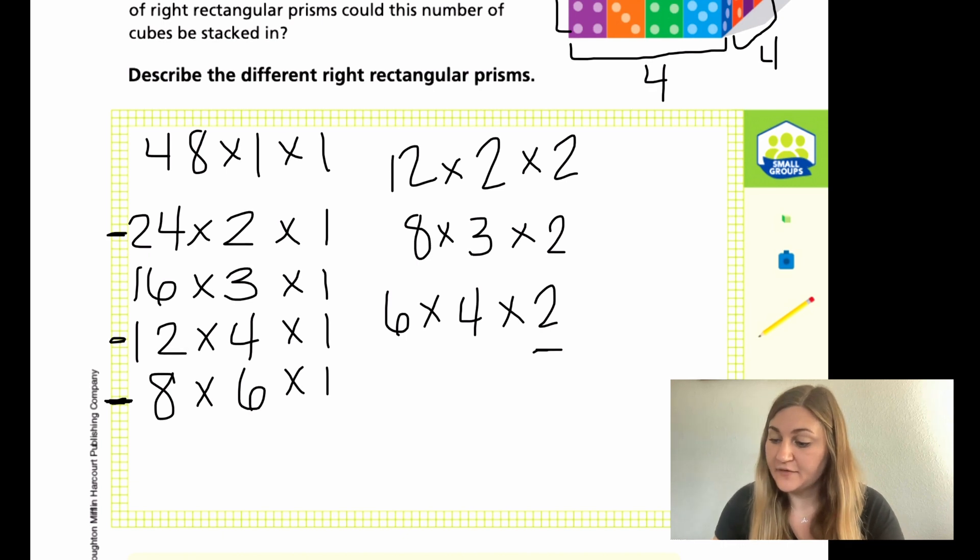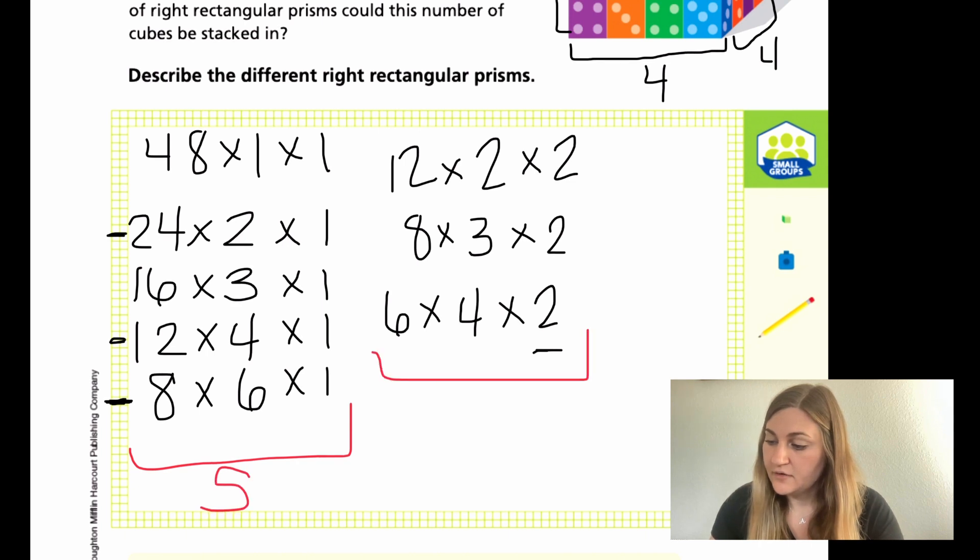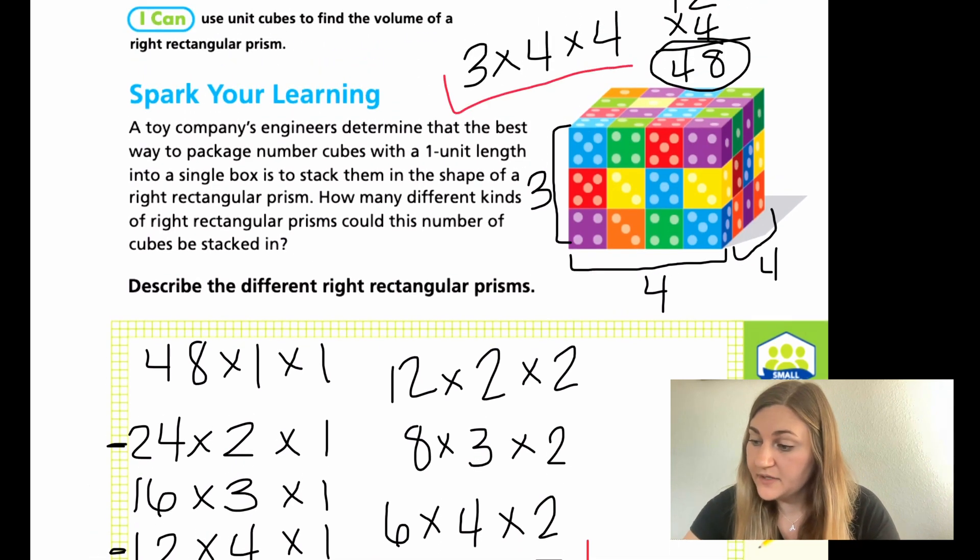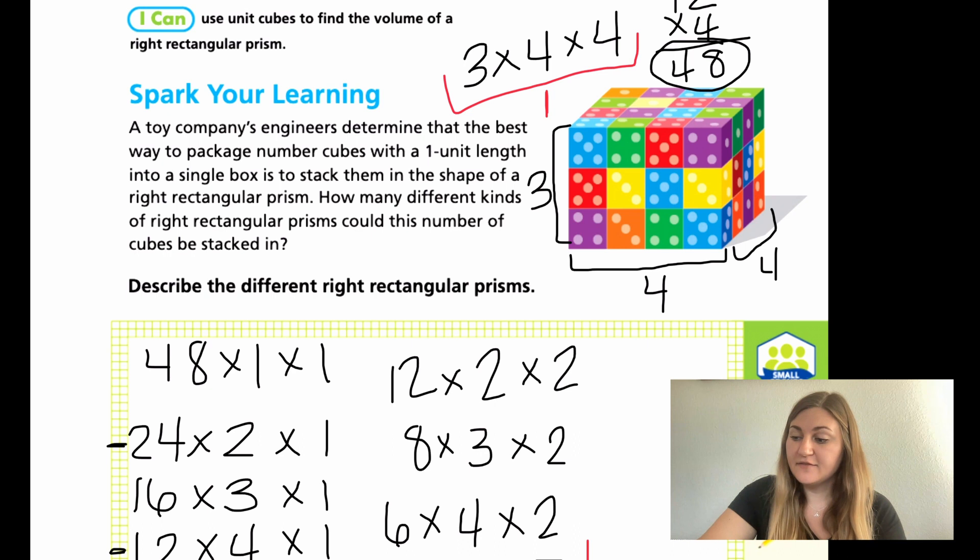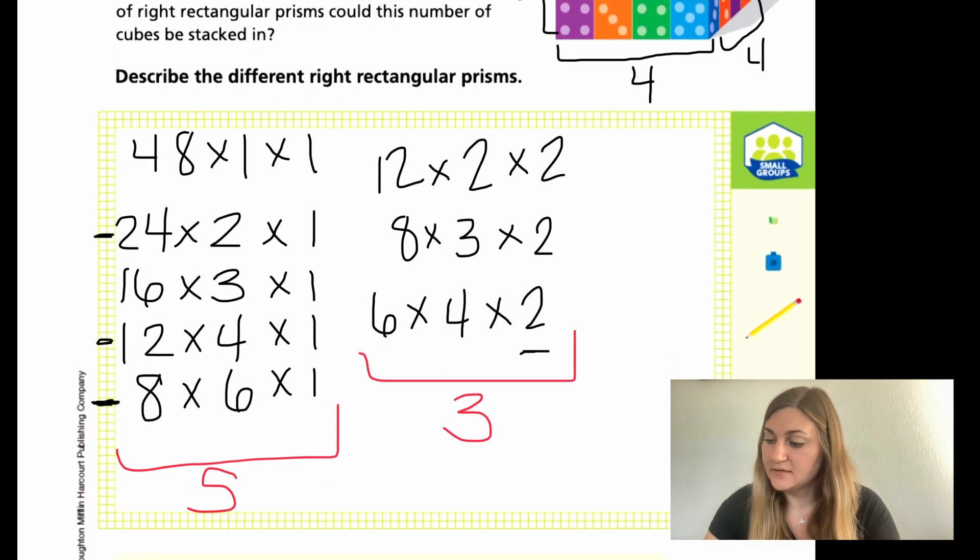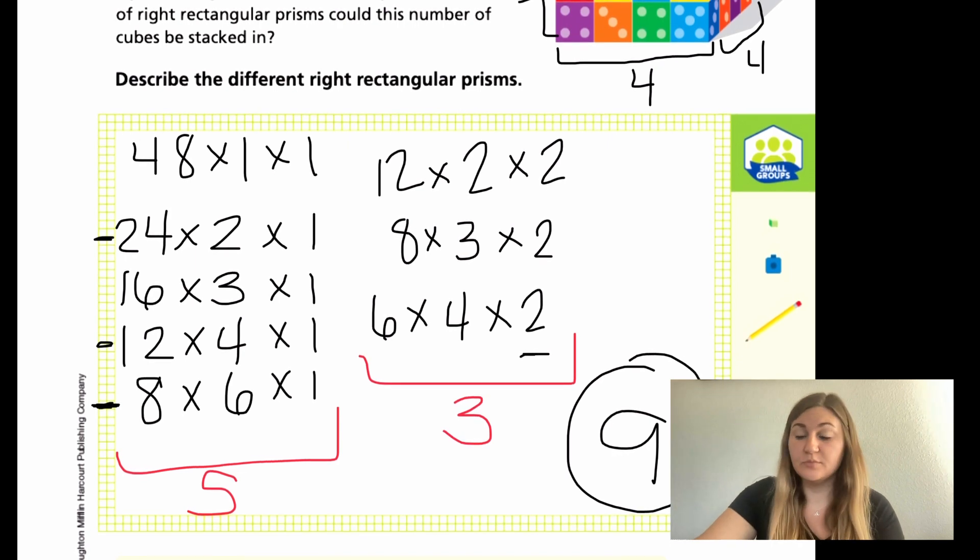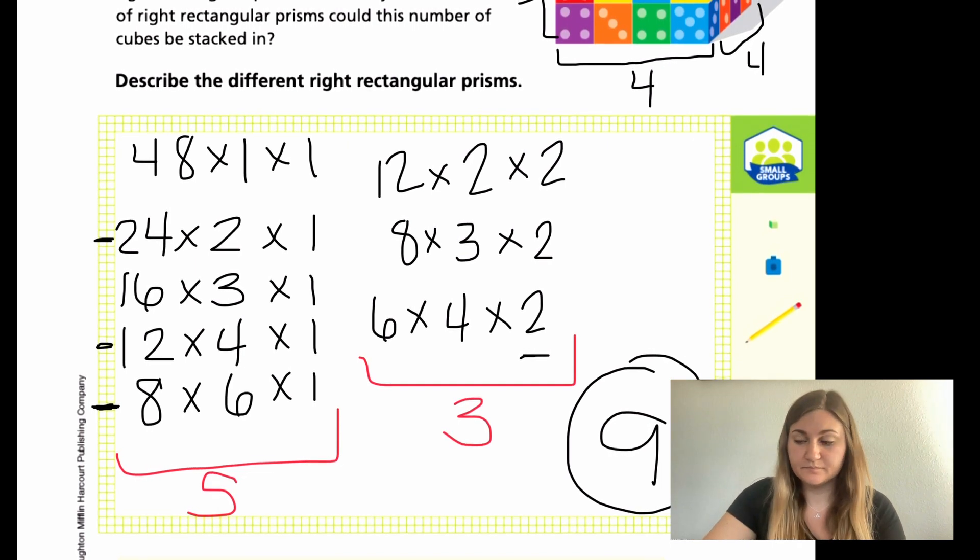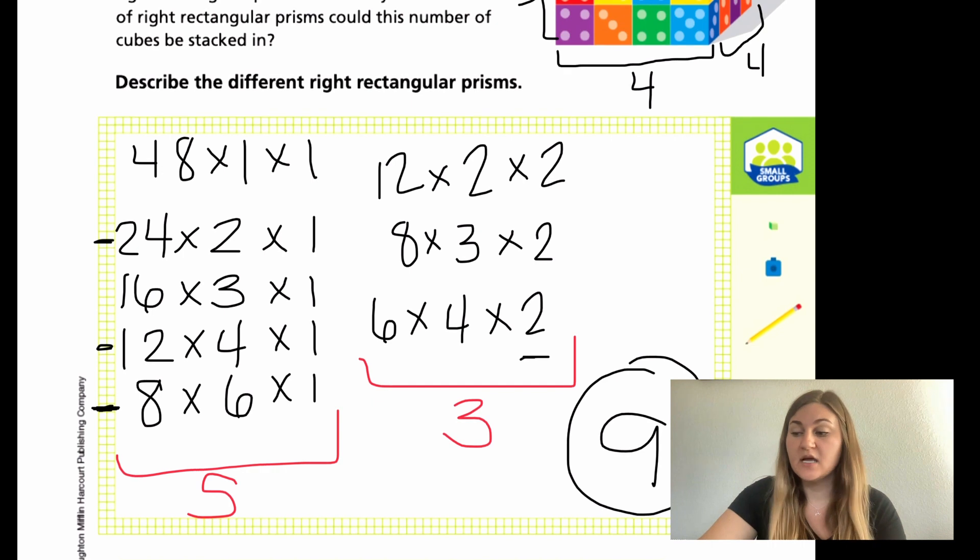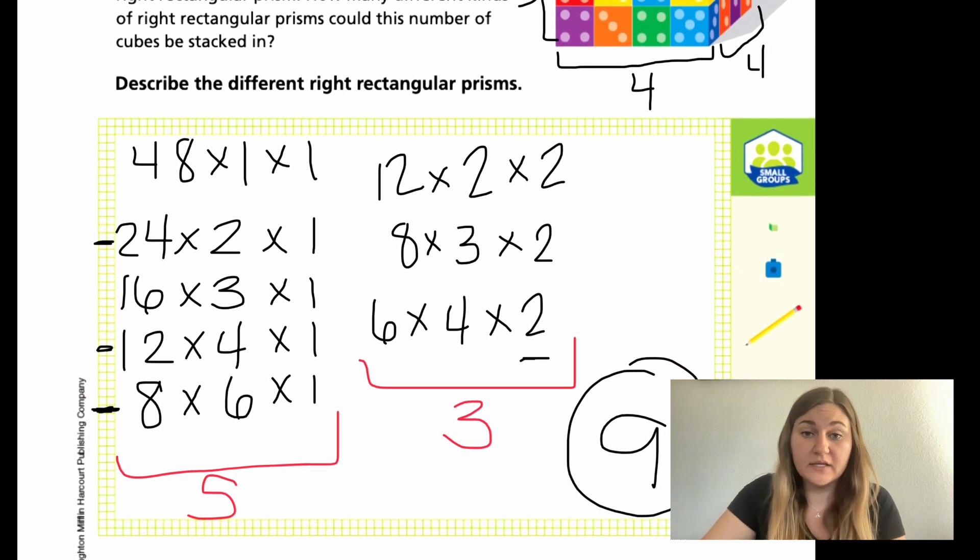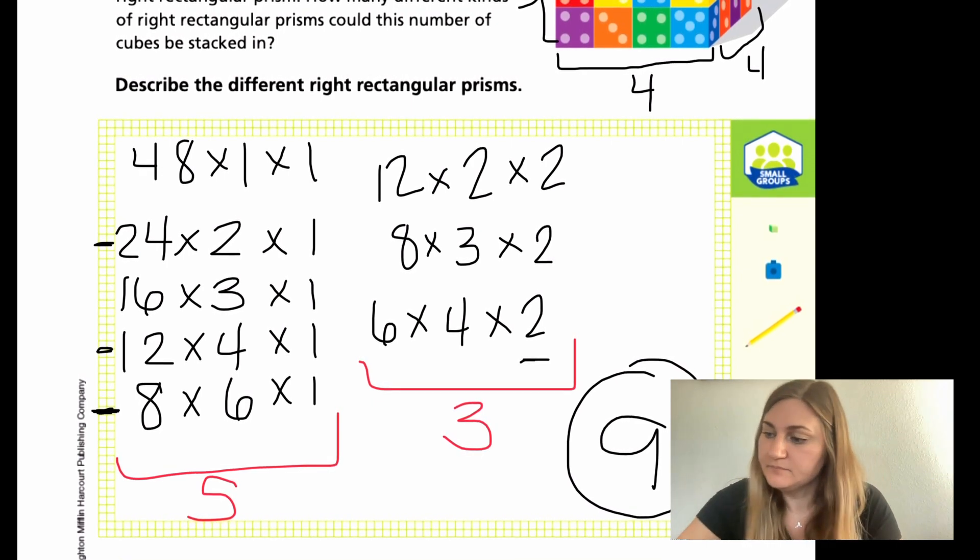So I know that I have here, I have 5 options here, 3 options here, and then the one that it gave me up here. So I have 5, 3, and 1, which means there are 9 different variations of this cube using 48 cubes. Just showing you different ways of different types of volumes that would all equal the same amount.